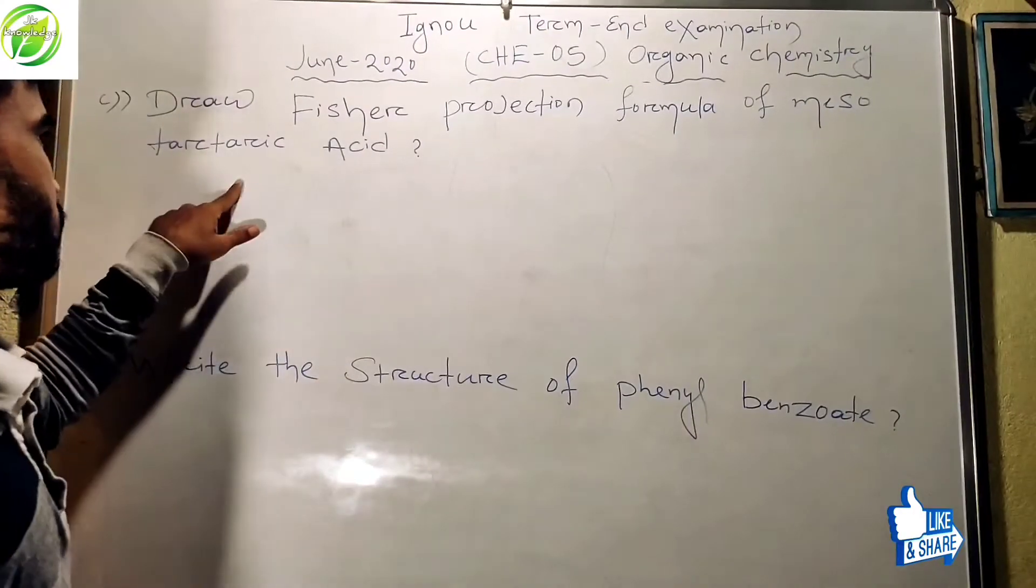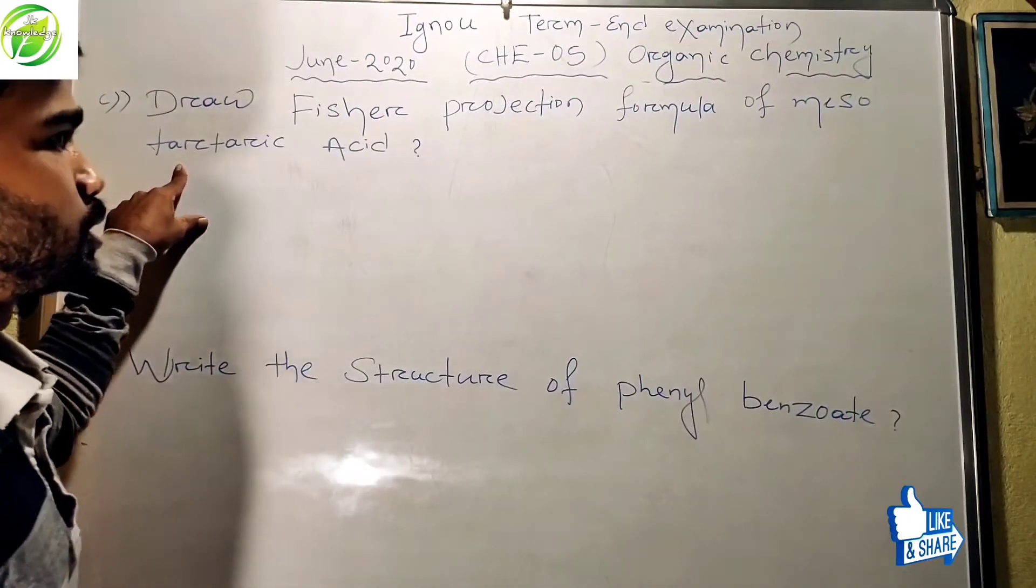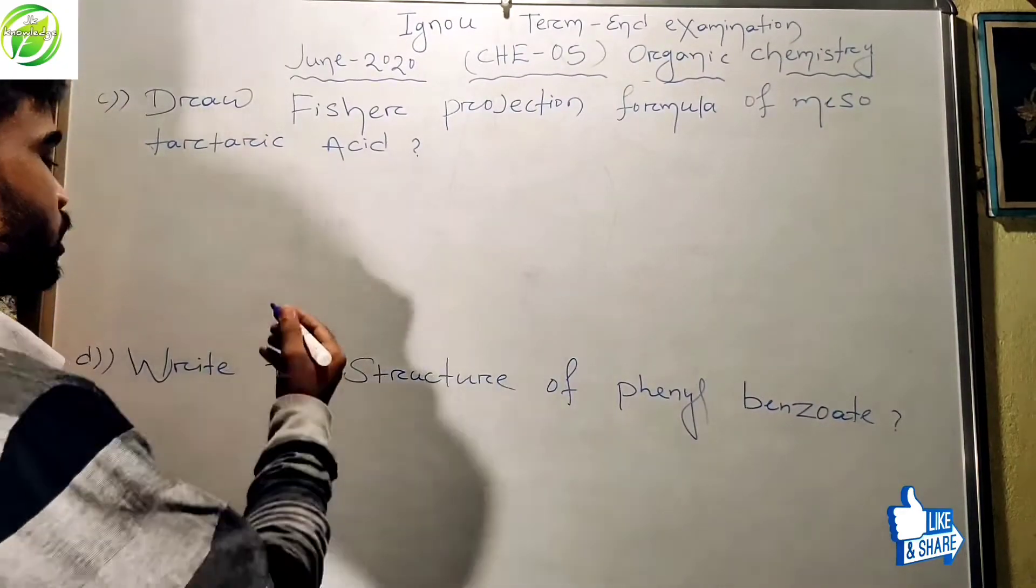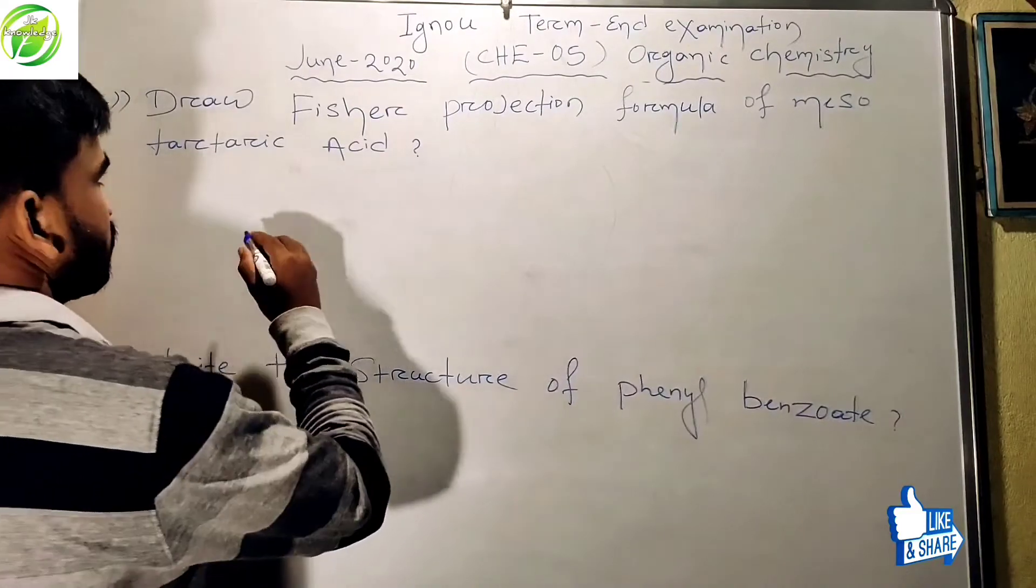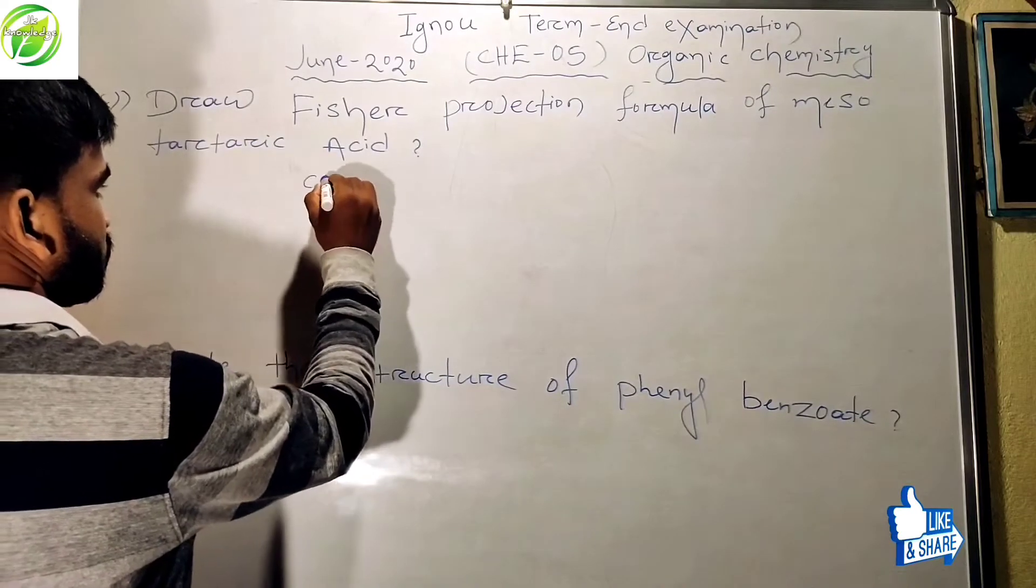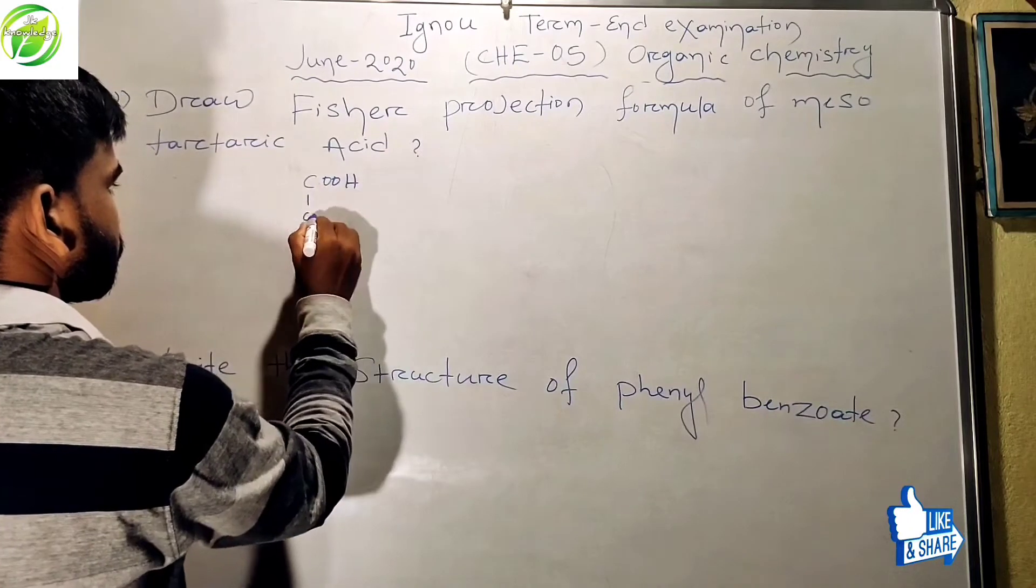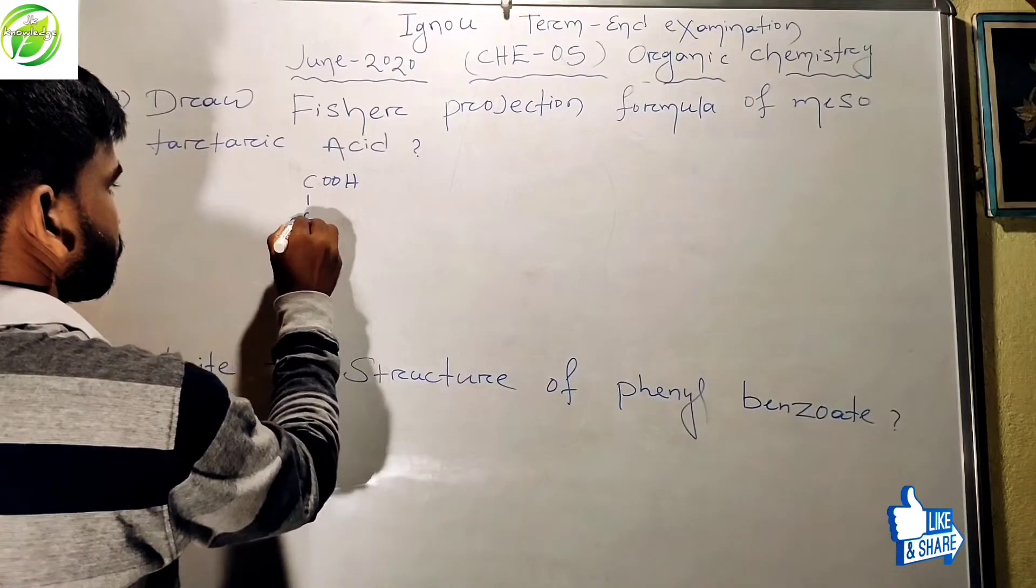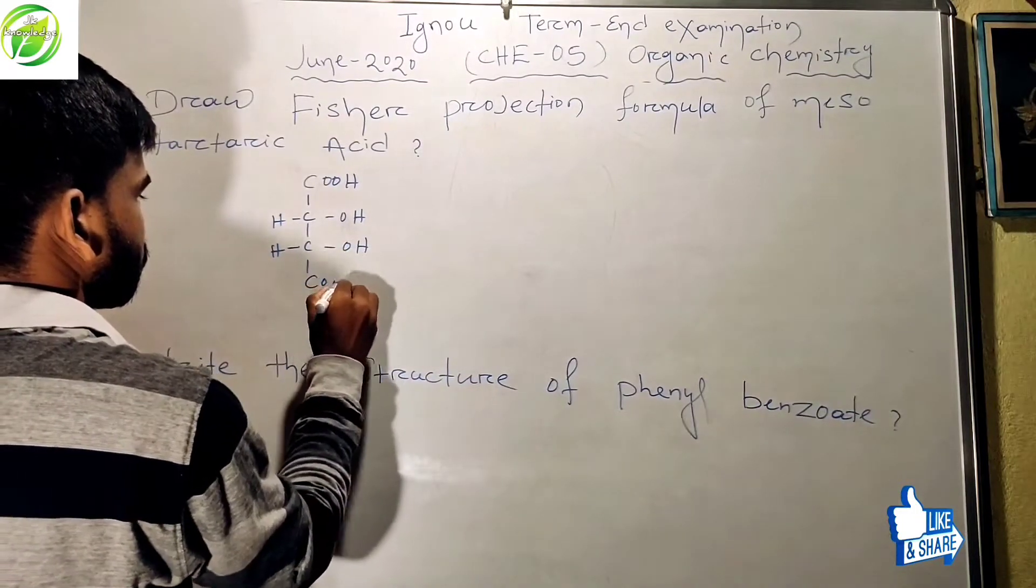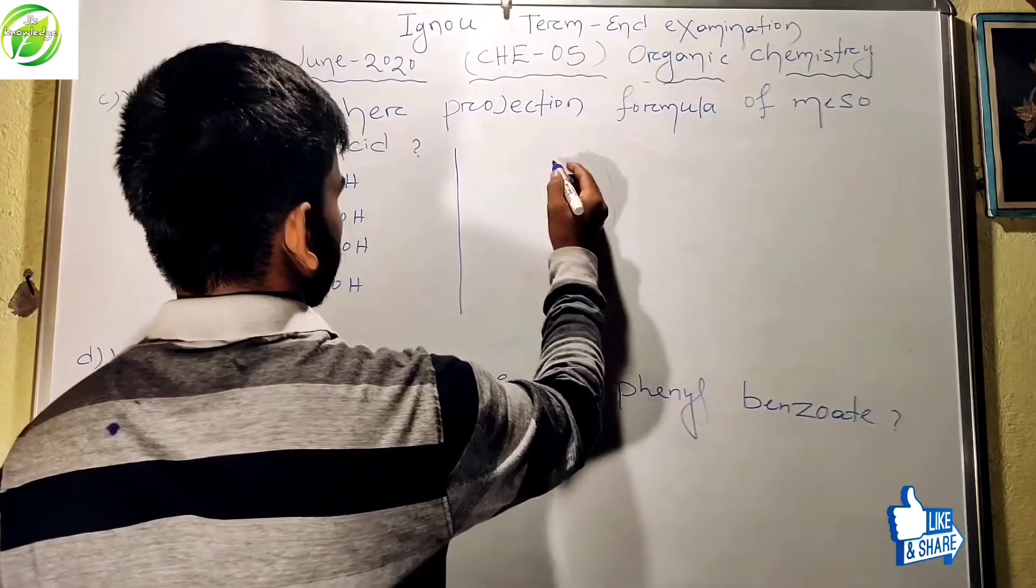Let's go to the next question. The next question is: draw the Fischer projection formula of meso-tartaric acid. Friends, you know meso compounds are optically inactive, means they did not rotate the plane polarized light. Let's try to draw this Fischer projection of meso-tartaric acid. We can write it in another way, write like this.